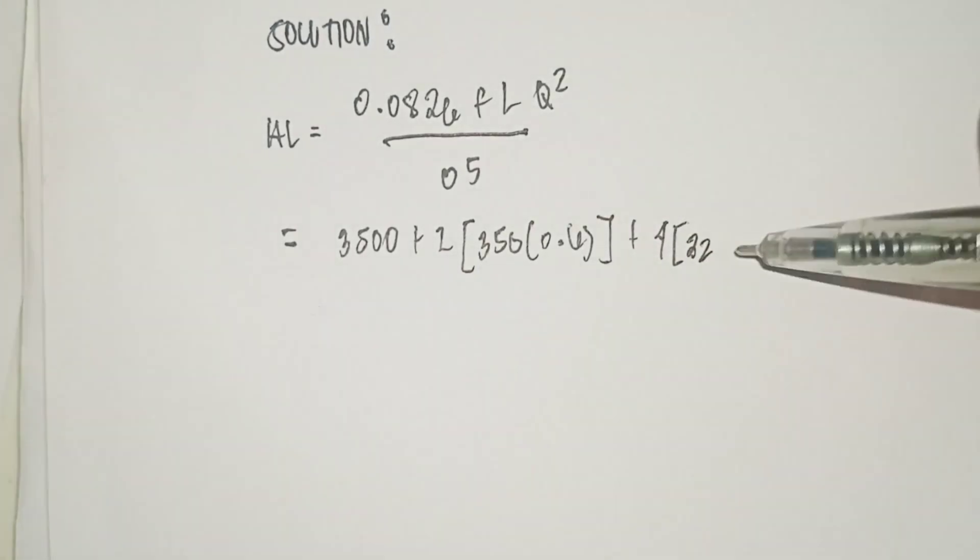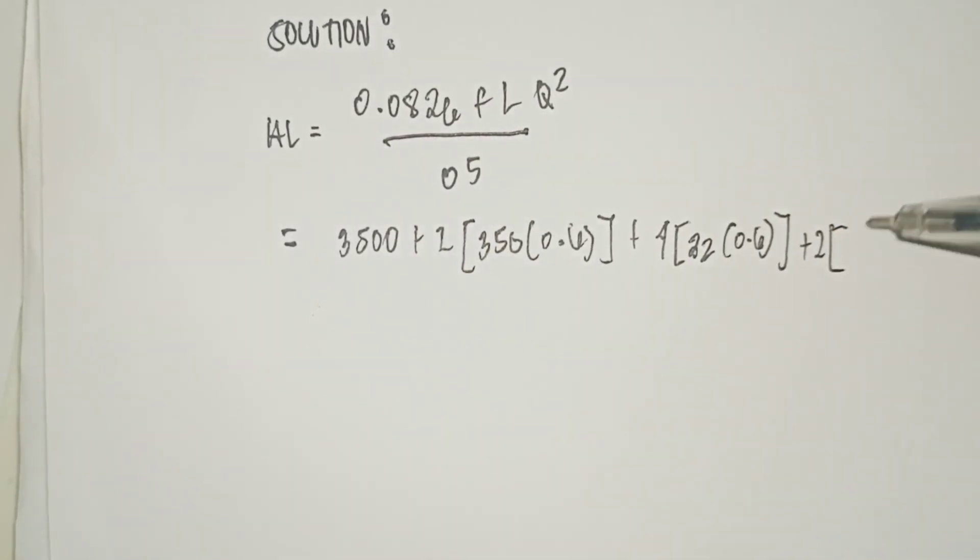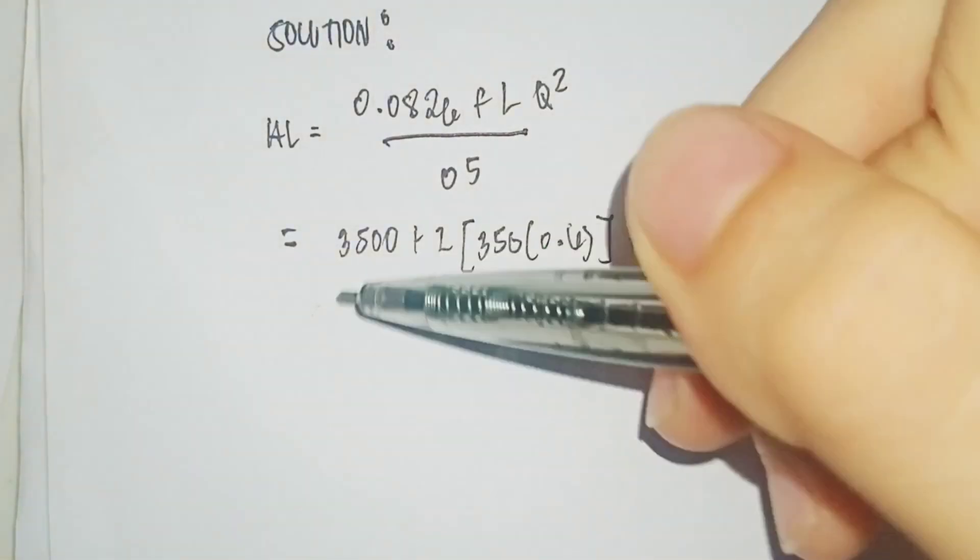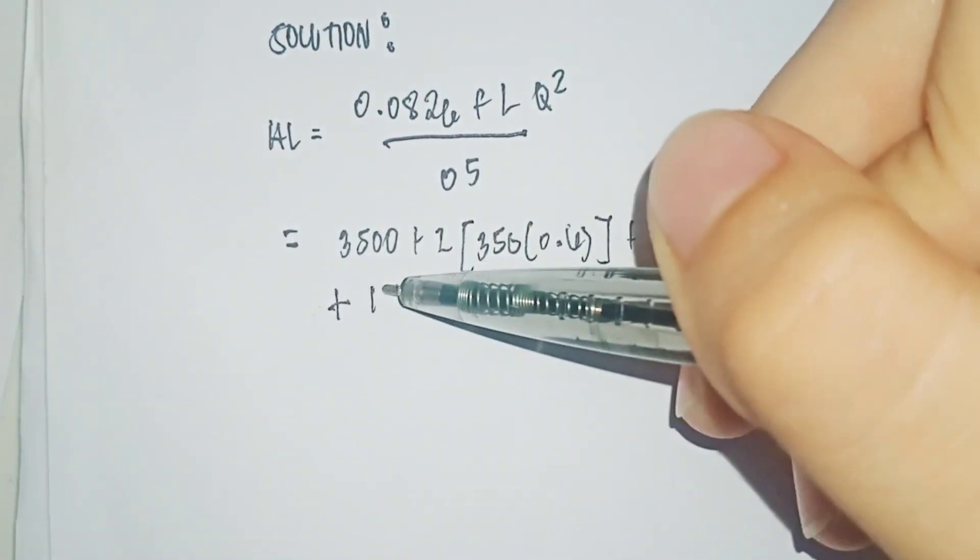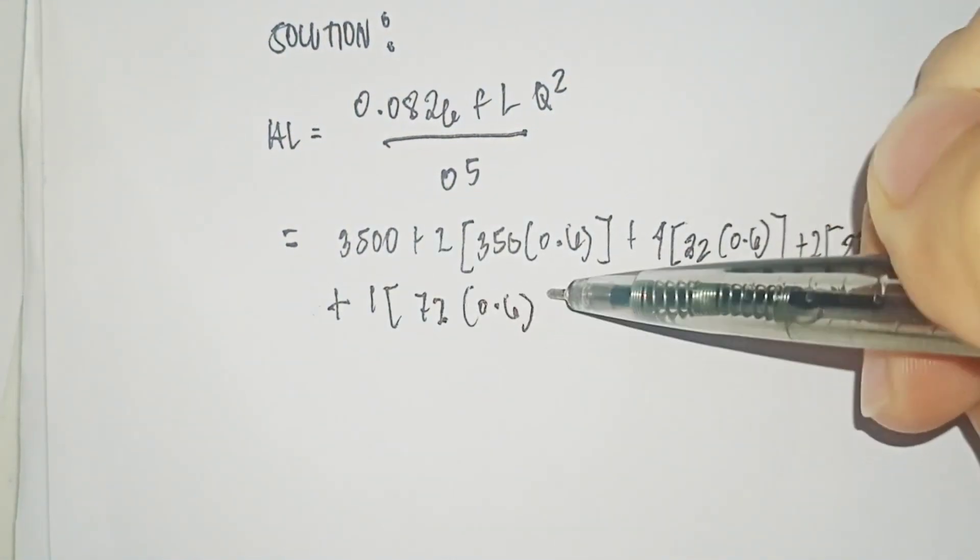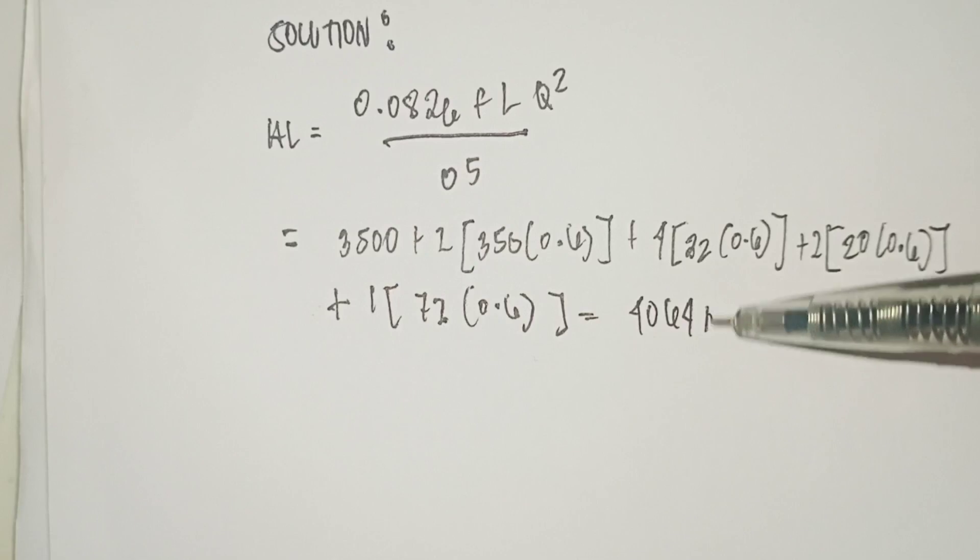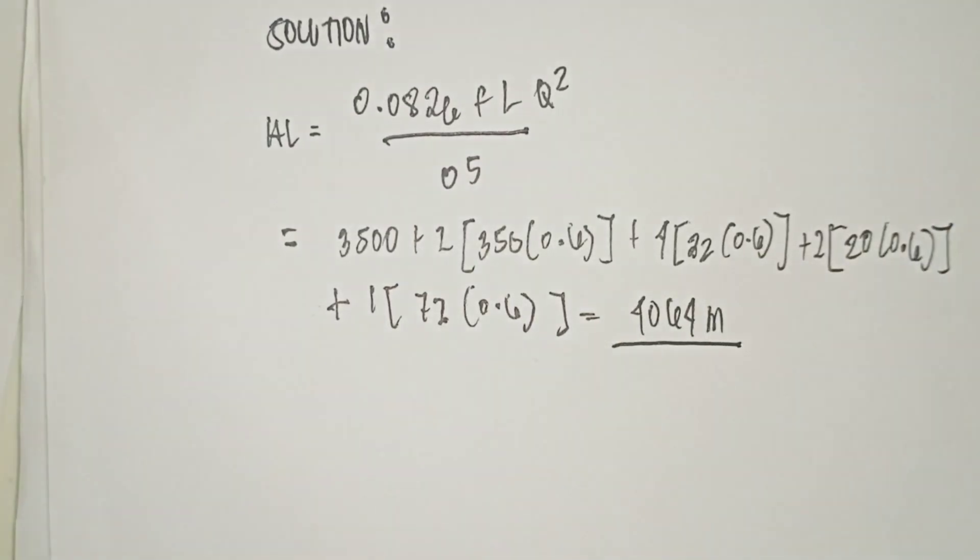Plus 2 times 20 times 0.6 plus 2 times 72 times 0.6. That equals 4064 meters.